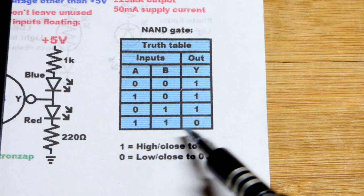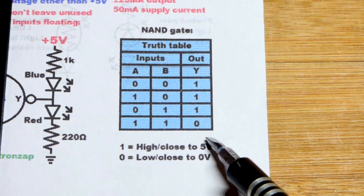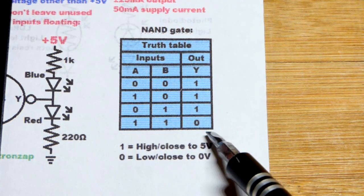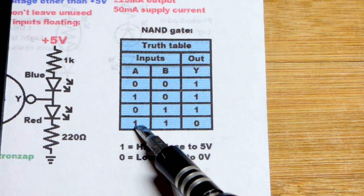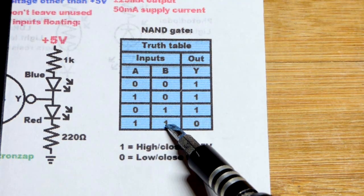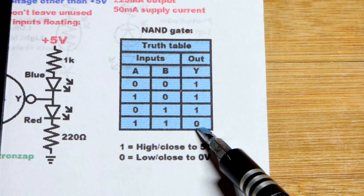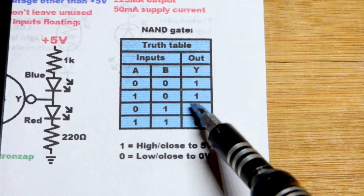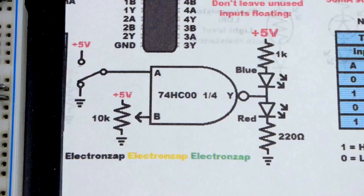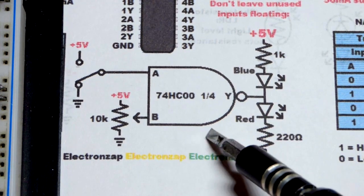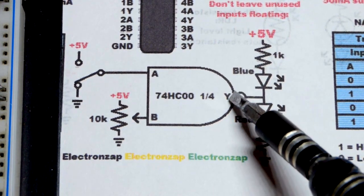The outputs of the integrated circuits generally don't go all the way to the supply rail, especially high. But in any case, you can see that both inputs have to be high for the output to be low for the NAND gate. If any inputs are low, the output is high.